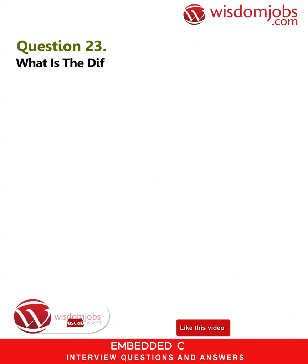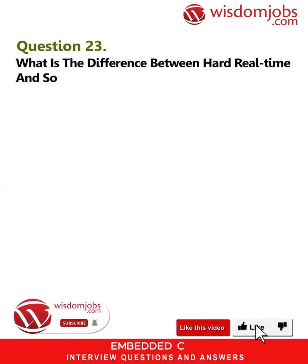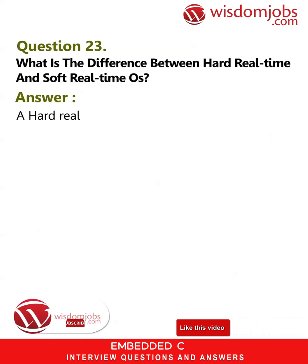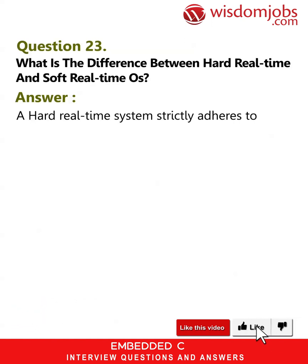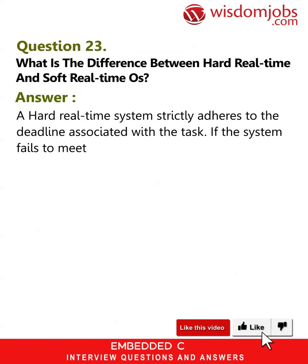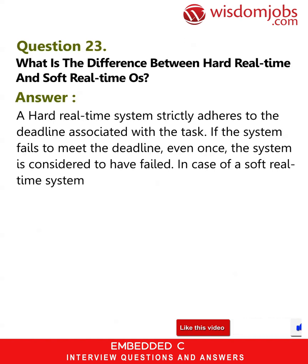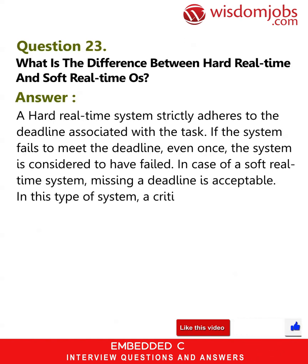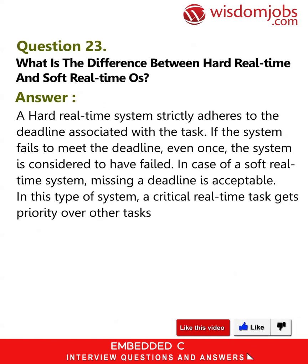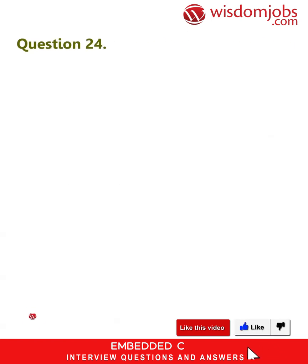Question 23: What is the difference between hard real-time and soft real-time OS? Answer: A hard real-time system strictly adheres to the deadline associated with the task. If the system fails to meet the deadline even once, the system is considered to have failed. In a soft real-time system, missing a deadline is acceptable. In this type of system, a critical real-time task gets priority over other tasks and retains that priority until it completes.